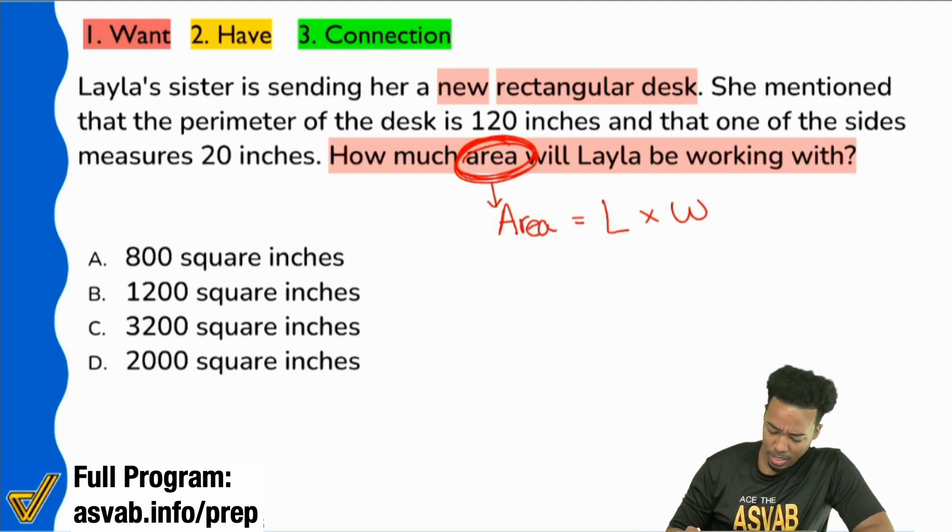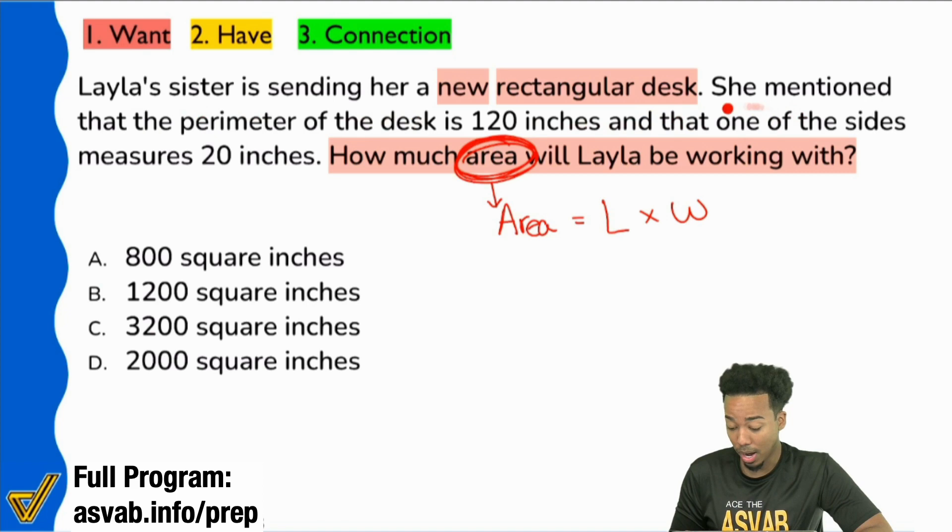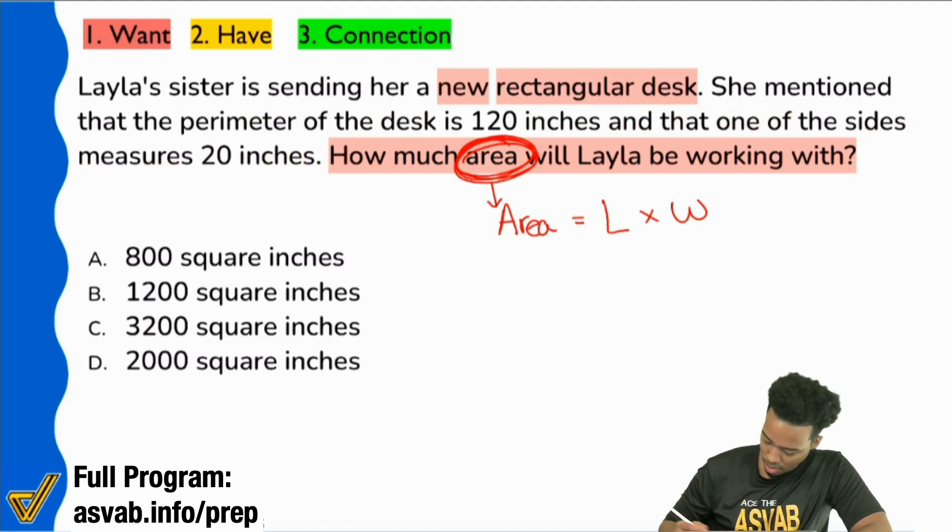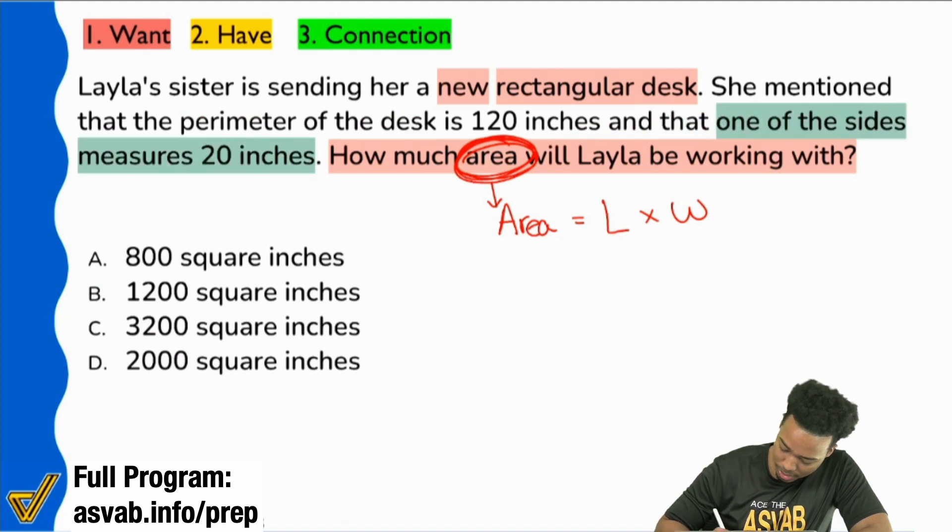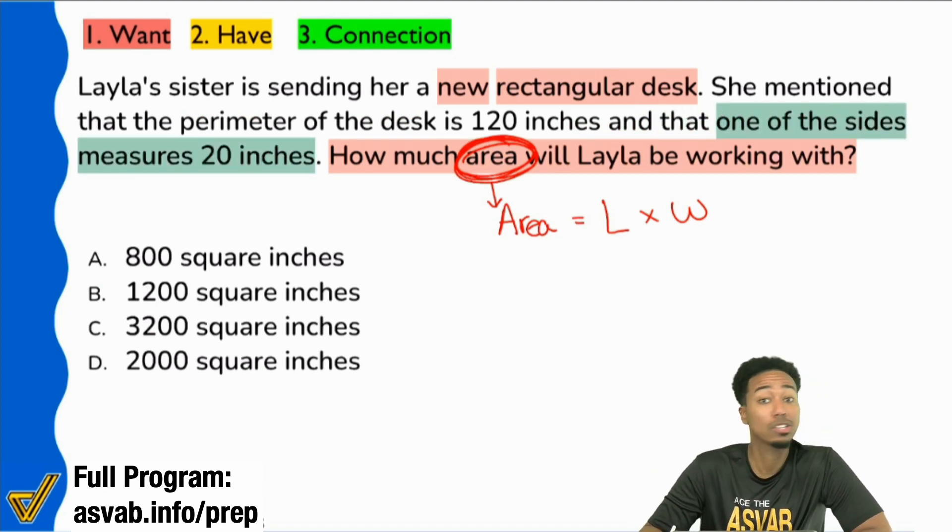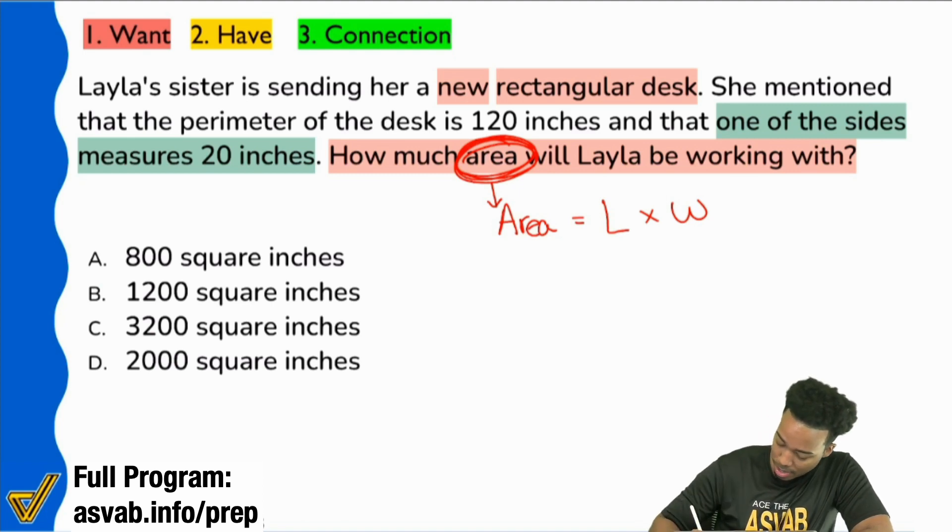Let's read. So it says, she mentioned that the perimeter of the desk is 120. Perimeter? I don't care about that. Screw that. Don't worry about that. And that one of the sides measures 20 inches. Oh, right there. Great. One of the sides measures 20 inches. That can be the length. That can be the width. I don't care. But I'm going to write that down right here. That my length, I'm going to say that my length is 20 inches.